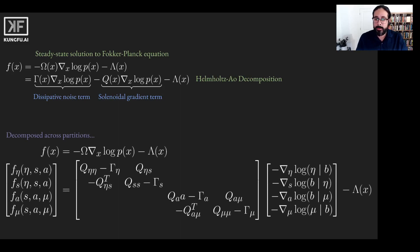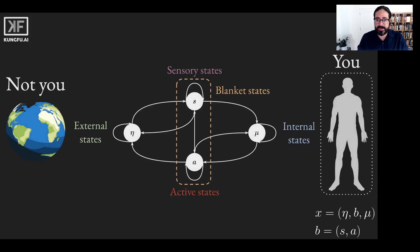In short, Bayesian mechanics tells us how to describe systems at non-equilibrium steady state and shows that such systems can exist and can be modeled. Next, we must ask: how do living systems maintain this boundary and stay in the characteristic states of their NESS density over time?